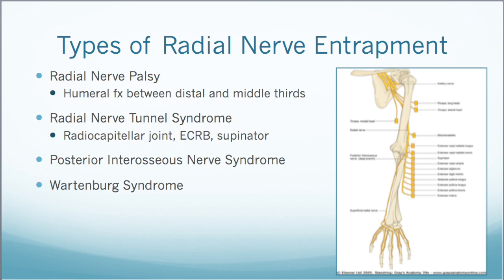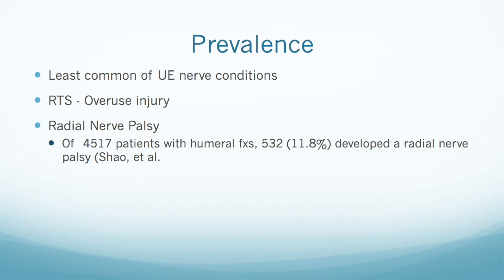Wartenberg syndrome is also compression-related, but it is more of a superficial sensory nerve issue that manifests mainly in sensory and numbness symptoms. Radial nerve entrapment is the least common of the upper extremity nerve issues compared to median or ulnar nerve issues. Radial tunnel syndrome is more of an overuse injury, but radial nerve palsy has been found to be present in about 11.8% of patients with humeral fractures. Posterior interosseous nerve syndrome can also result from rheumatoid arthritis or other rheumatoid conditions.